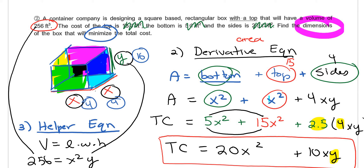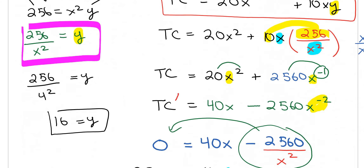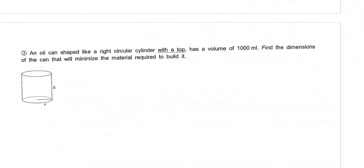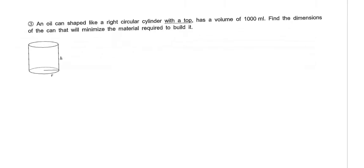That was a pretty long problem, but it was still very similar to the first problem we did. Make sure you practice this question if you're still stuck — the algebra with this problem and the previous problem are very similar. Let's do one more optimization problem and then we'll finish this video guide.